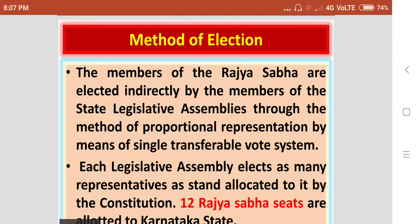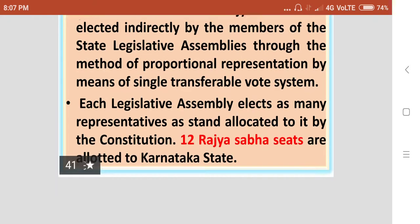Members are elected by the legislative assemblies through the method of proportional representation by means of a single transferable vote system. Each legislative assembly elects as many representatives as stand allocated to it by the Constitution. Twelve Rajasabha seats are allotted to Karnataka State.